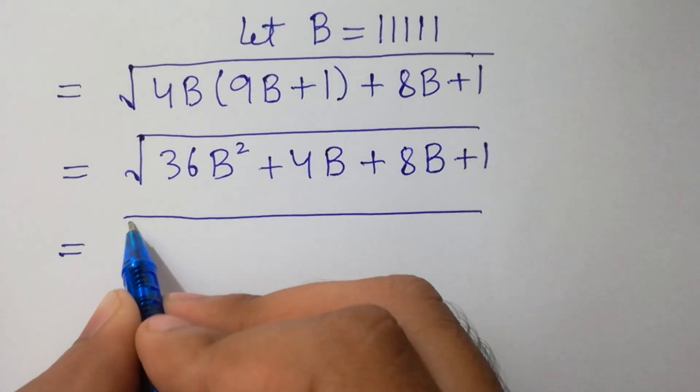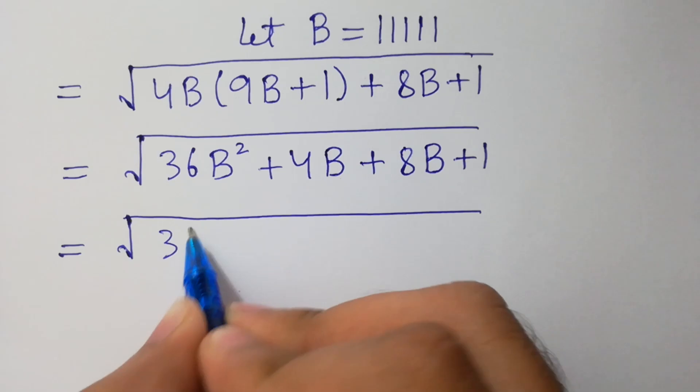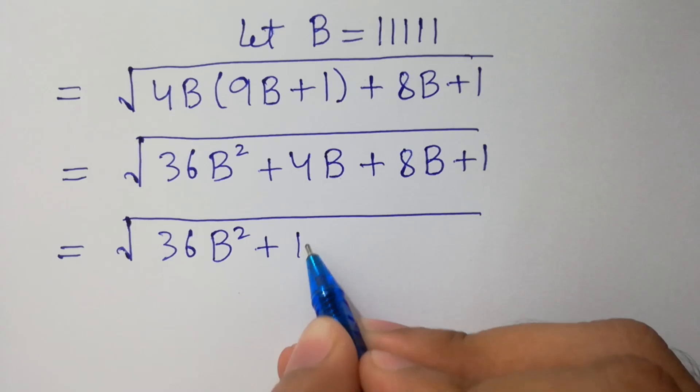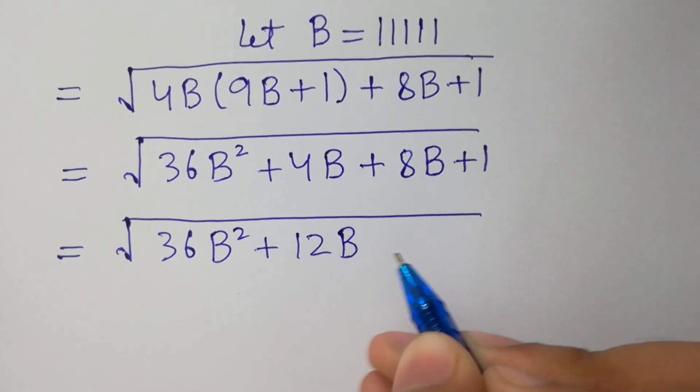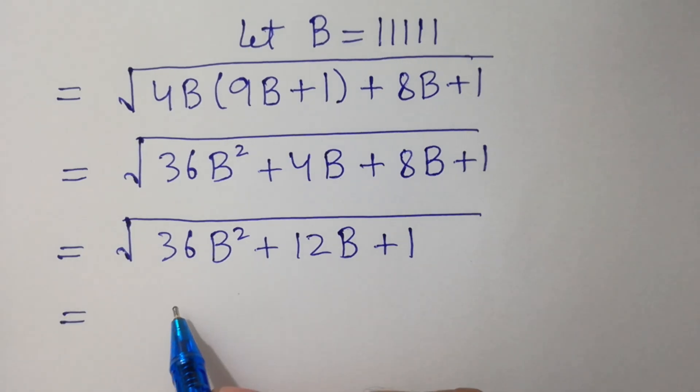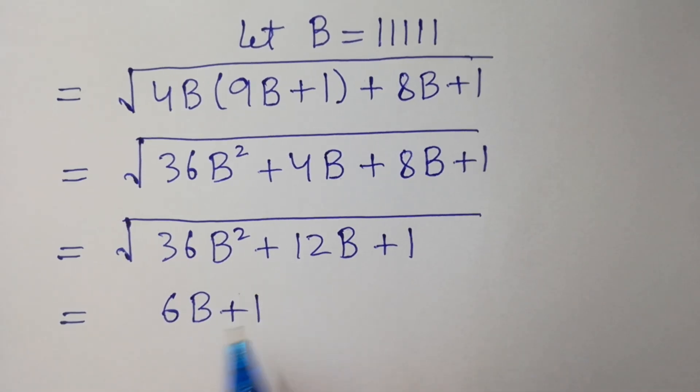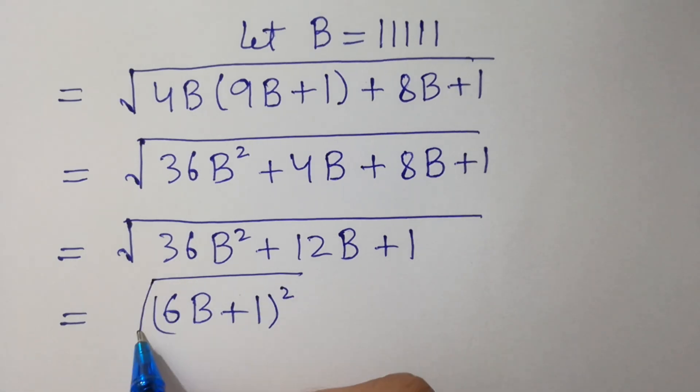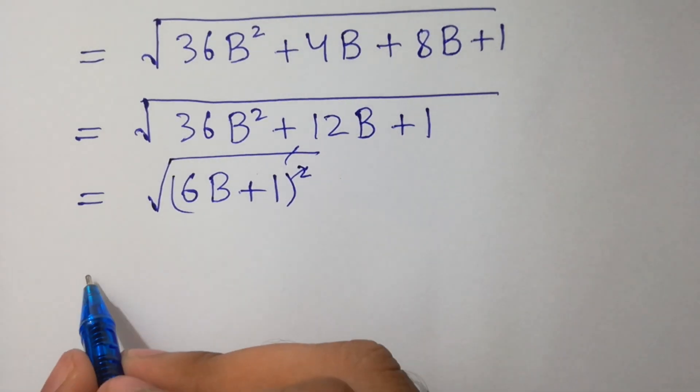We have 4 times 9, 36B squared, plus 4B, plus 8B, plus 1. Next step, we have 36B squared, plus 8 plus 4, 12B, plus 1. We can write here by factorizing 6B plus 1 whole squared. Square root and square will be cancelled, we have 6B plus 1.